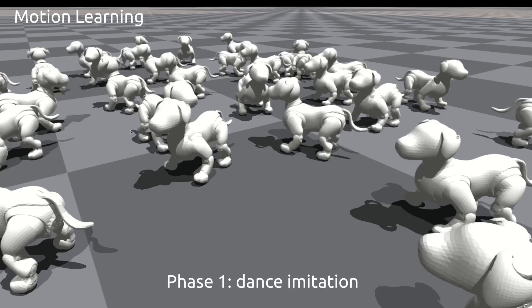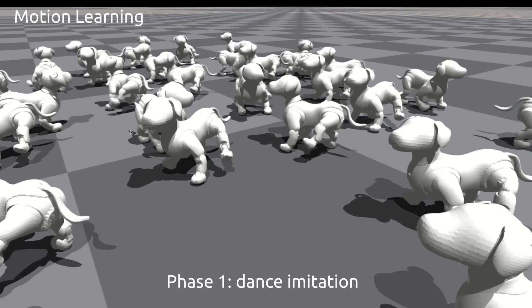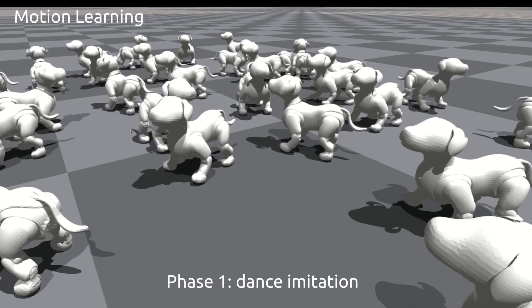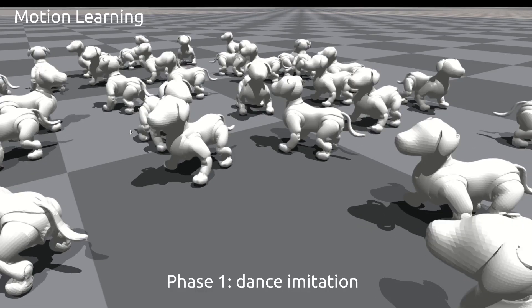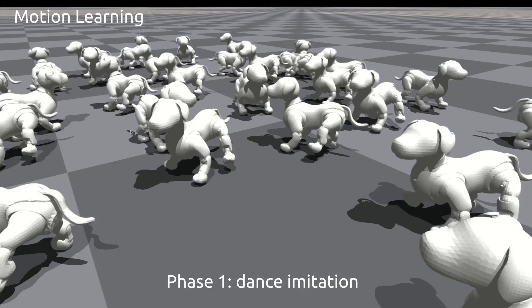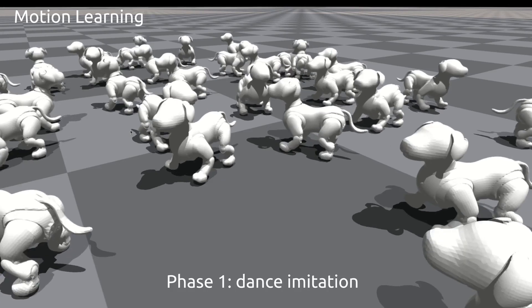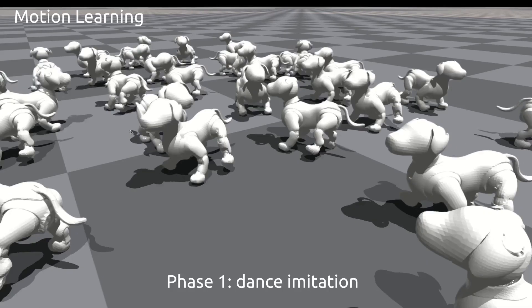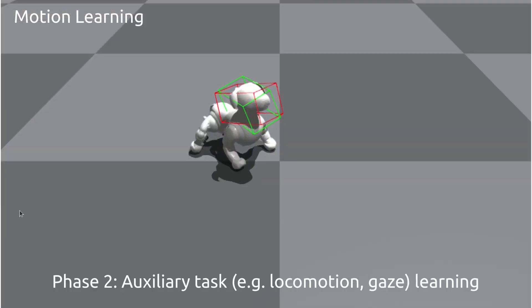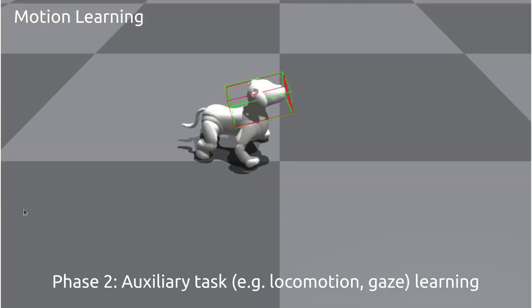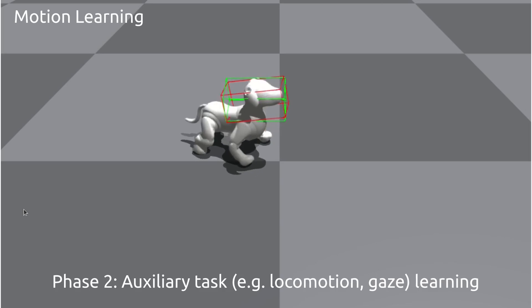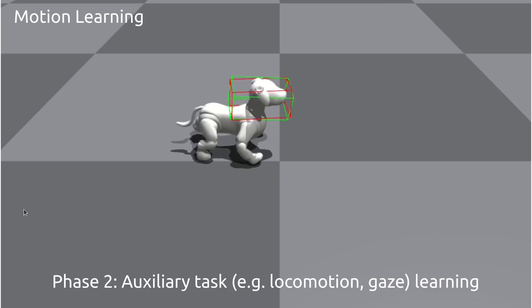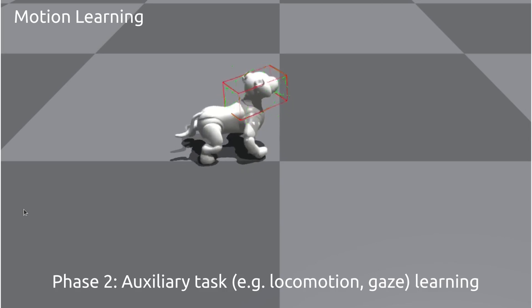In the first phase of our curriculum, AIBO learns to dance to reproduce reference dance motions as much as possible. In the second phase, AIBO learns additional tasks such as locomotion or gaze on top of the acquired dance skills.